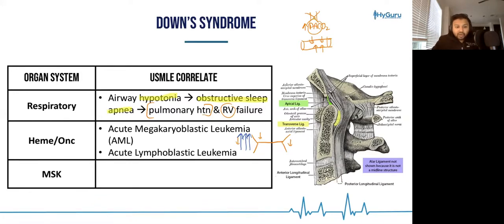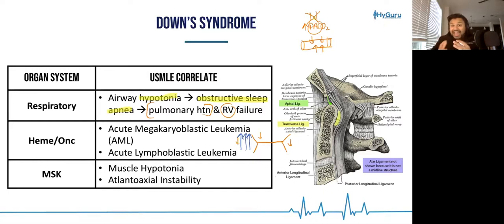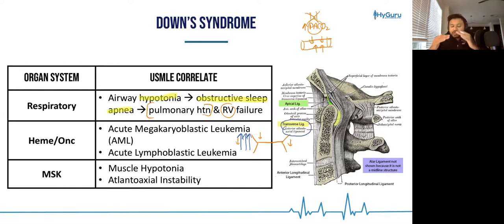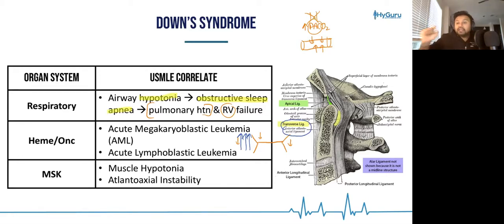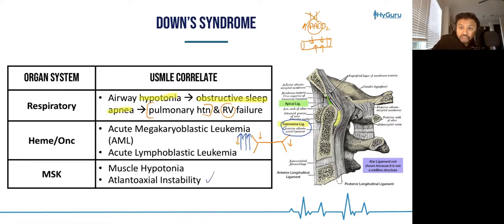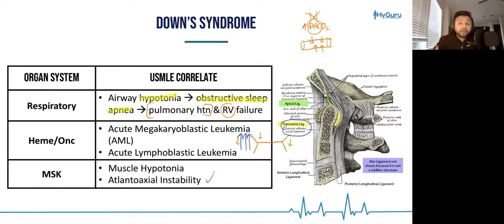From an MSK standpoint, recognize not only muscle hypotonia but also atlantoaxial instability. The atlas and axis are your upper cervical vertebrae. The atlantoaxial ligament can be very loose, such that hyperextension of the neck could sever the upper cervical spinal cord — potentially life-threatening. This is important not only in Down syndrome but also in patients with rheumatoid arthritis, who have such inflammation of connective tissues that they can also present with atlantoaxial instability.